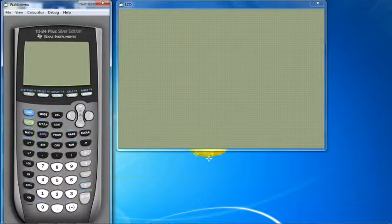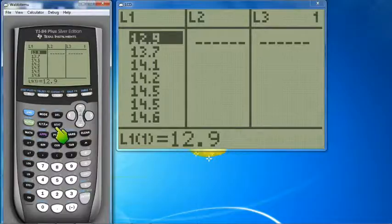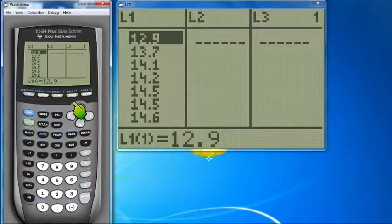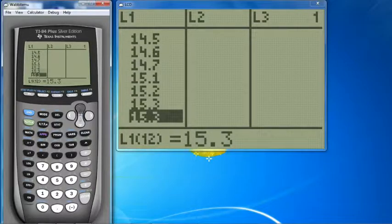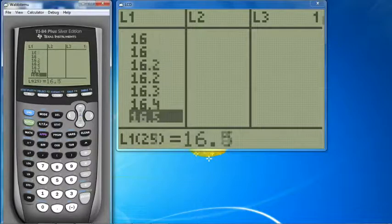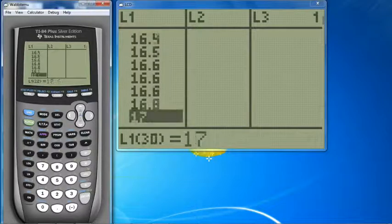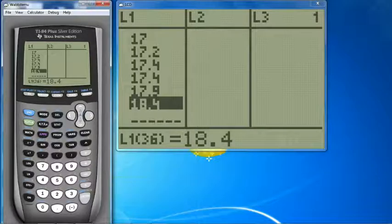Let's take a look at the calculator. Stat, edit. Those are your first two buttons. You hit stat, and then edit. And then I've already entered all 36 of the refrigerators in here. Hoping there's no errors. I checked it. There's 36 of them. They look good. So you can see L1, 36. Last one was 18.4.